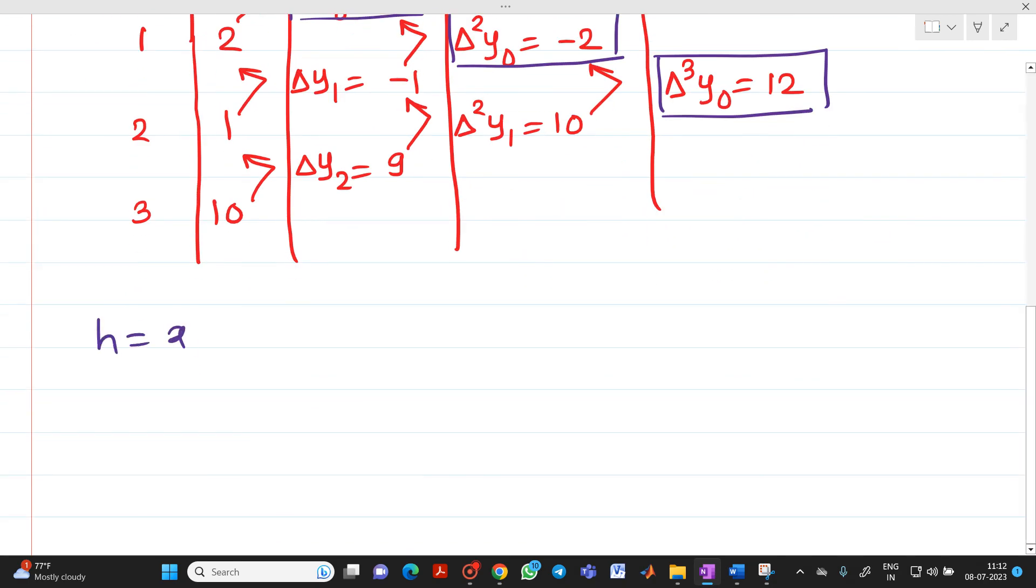Now how to find it out? h step size, it is x1 minus x0, which is equal to 1 minus 0 is 1. And we know that in the formula we have P equal to x minus x0 upon h, which is equal to x minus 0 upon h will be 1. So what is the value of P here? We have to put P equal to x.